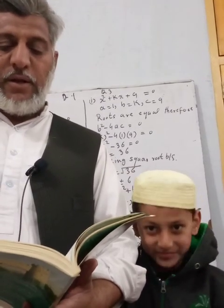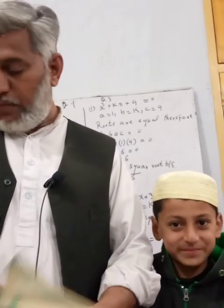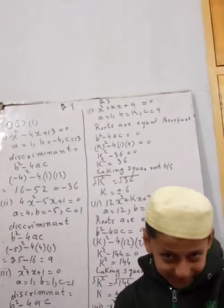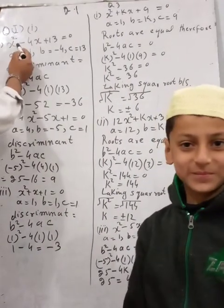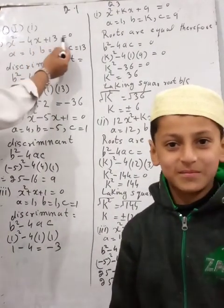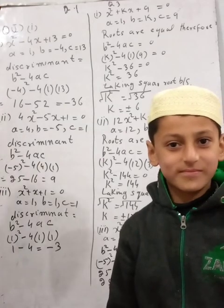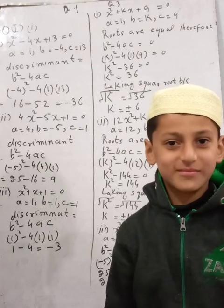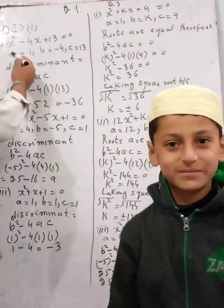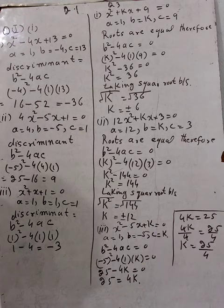For a quadratic equation, we find the discriminant. Question number 1: x squared minus 4x plus 13 is equal to zero. The highest power of x is 2. The discriminant formula is b squared minus 4ac.